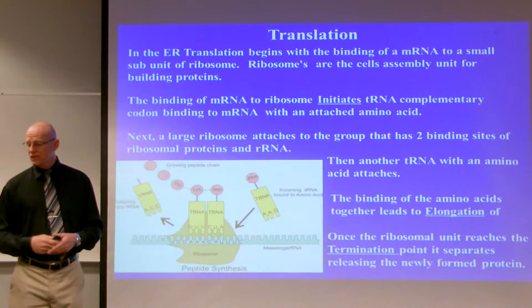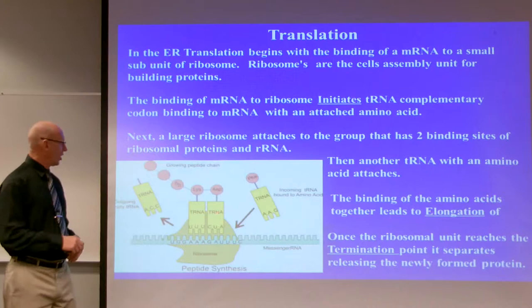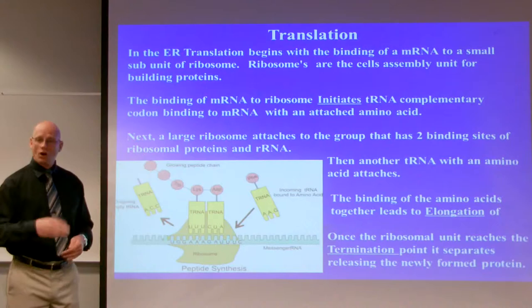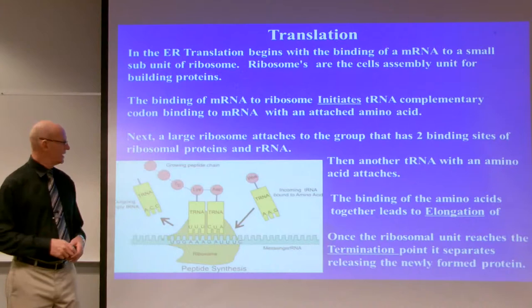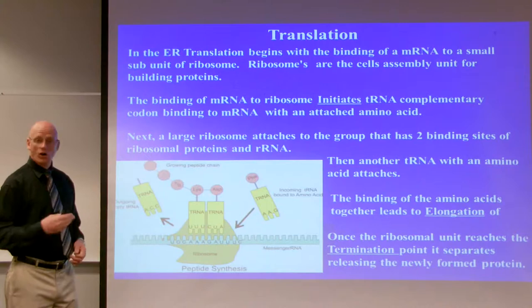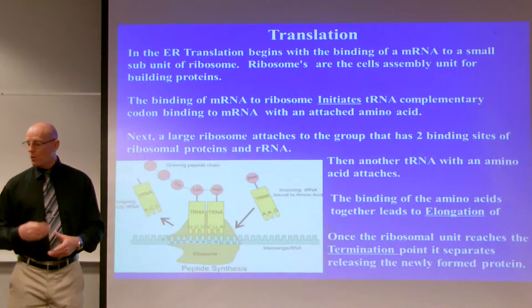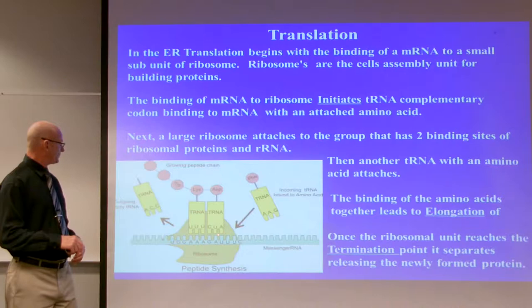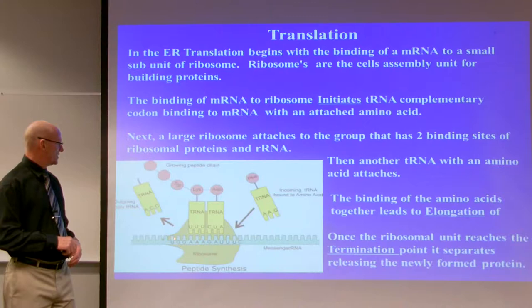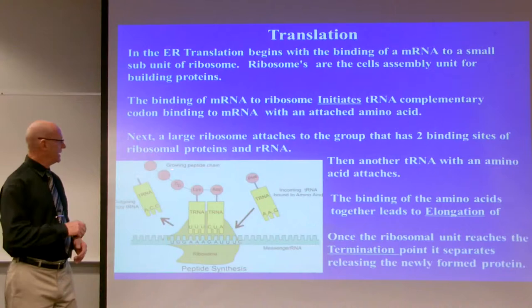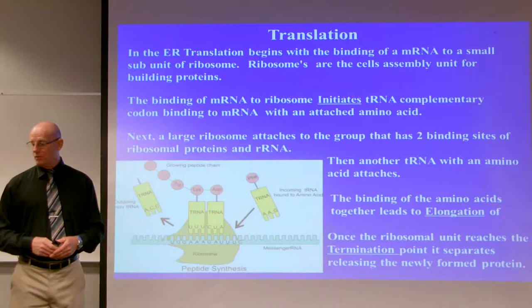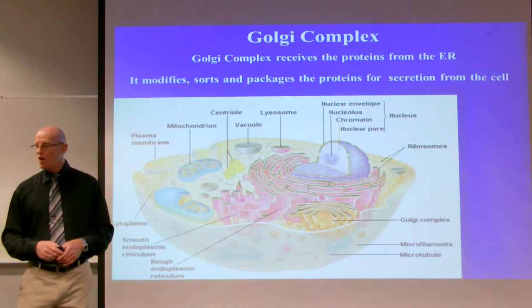When the transfer RNA comes down and binds to the messenger RNA, that signals a large ribosome to come and attach to the group, which has two binding sites of ribosomal proteins. Another transfer RNA comes down and binds right after. As transfer RNAs bind to the messenger RNA, the amino acids with energy start to elongate — they start attaching to each other in the process of elongation. Once the ribosomal subunits reach their termination point, the transfer RNAs detach, the amino acids are released, and the protein is formed.